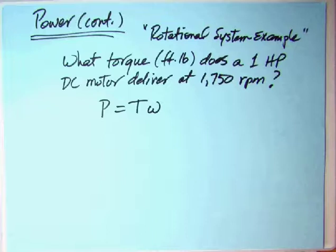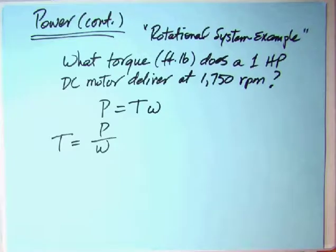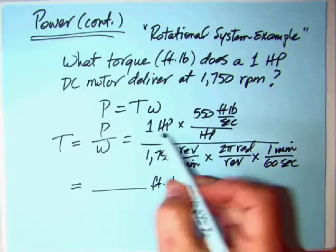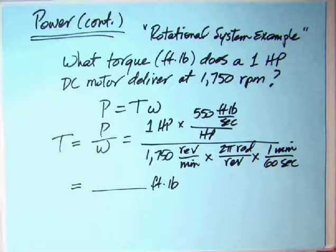Start from your fundamental equation, like you'd start a kinetics problem with F equals MA. We'll start with power equals torque times omega, and solve for torque. Torque's going to equal power divided by omega. What we have in the numerator is our one horsepower and our conversion: 550 foot-pound per second per horsepower. Then we have the conversion: 1750 RPM times 2π radians per revolution times 1 minute per 60 seconds.